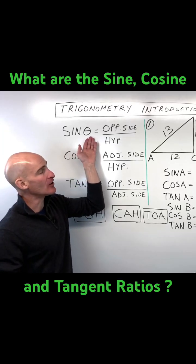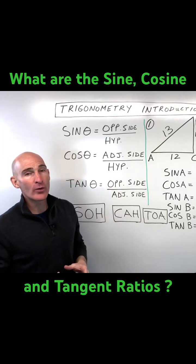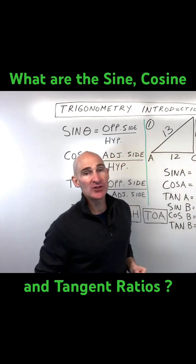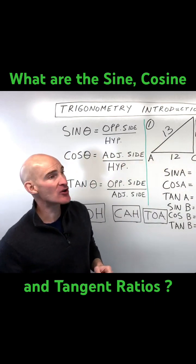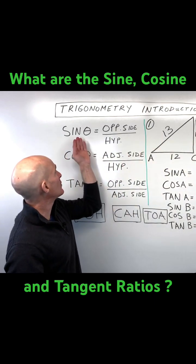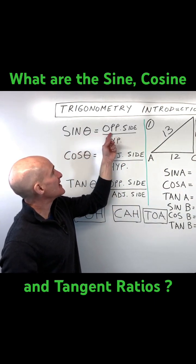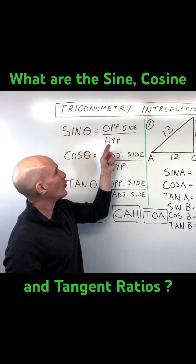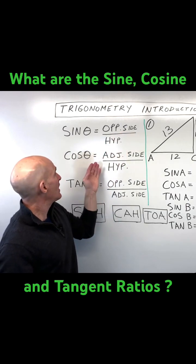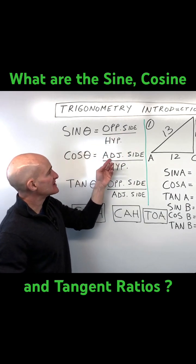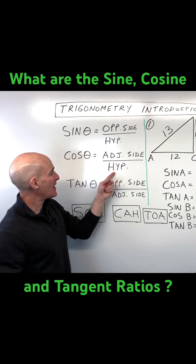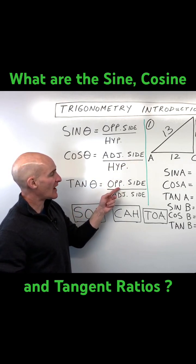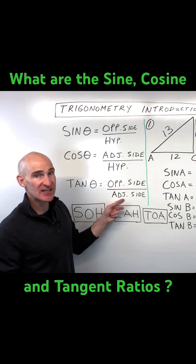When we talk about the sine of an angle, we're talking about the ratio of two sides in a right triangle. The sine of an angle is the opposite side over the hypotenuse, the cosine is the adjacent side over the hypotenuse, and the tangent is the ratio of the opposite side over the adjacent side.